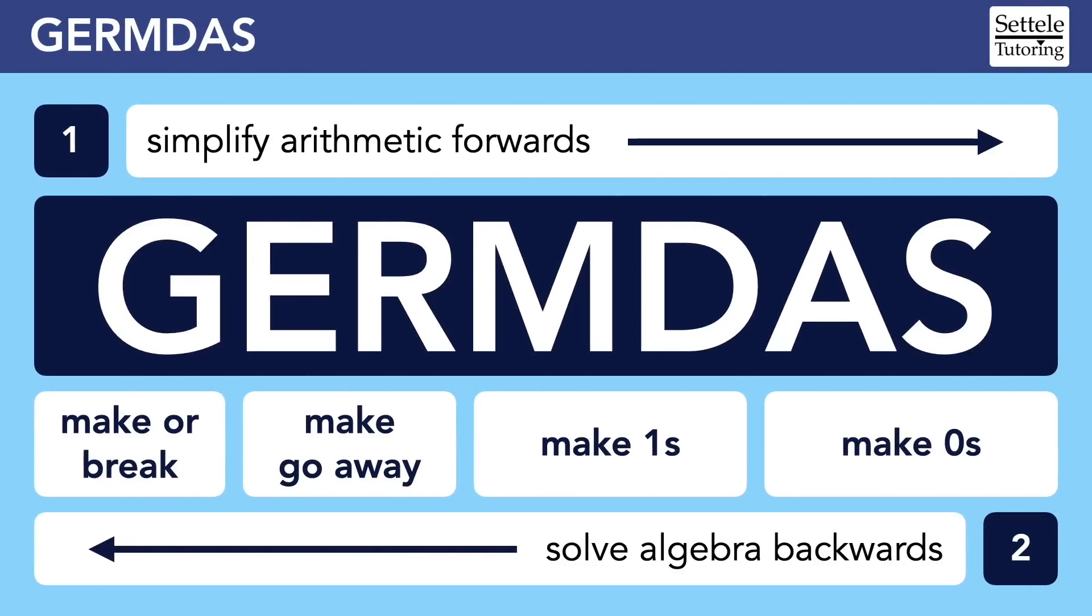For now, use this cheat sheet to start organizing the way you think about equations. In a way, this picture summarizes most of the math that you learn in high school. If you often make careless math mistakes, it might be because you never really learned the order of operations. Hopefully, this lesson and GERMDAS give you a stronger foundation to build on. Thanks for watching.